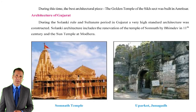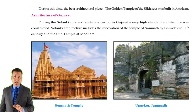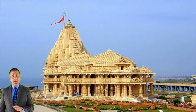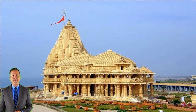Architecture of Gujarat: During the Solanki rule and Sultanate period in Gujarat, a very high standard architecture was constructed. Solanki architecture includes the renovation of the temple of Somnath by Bhimadev in the 11th century and the Sun Temple at Modhera. Gujarat mein Solanki shasan aur Saltanat kaal ke dauran ek bahut hi uchch maanak vaastukala ka nirman kiya gaya tha. Solanki vaastukala mein 11vi shatabdi mein Bhimdev dwara Somnath ke mandir ka jirnodhar aur Modhera mein Surya Mandir shamil hai.